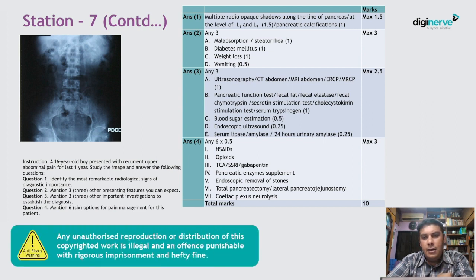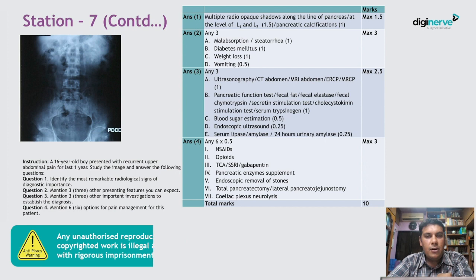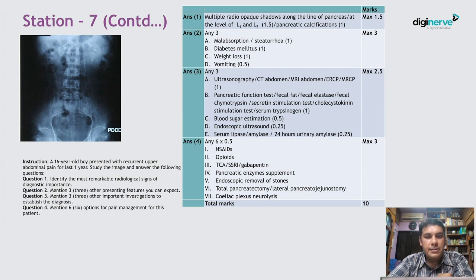Investigations that can be done include ultrasonography, CT abdomen, MRI abdomen, ERCP, or MRCP. Pancreatic function tests such as fecal fat, fecal elastase, fecal chymotrypsin, secretin stimulation test, cholecystokinin stimulation test, or serum trypsinogen can be ordered. Blood sugar estimation, endoscopic ultrasound, and serum lipase or urinary amylase are also useful.